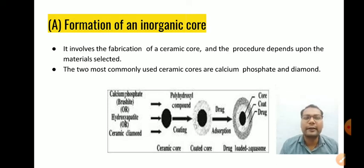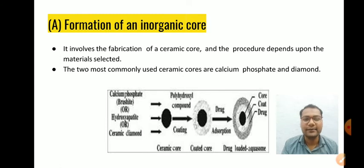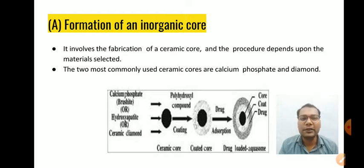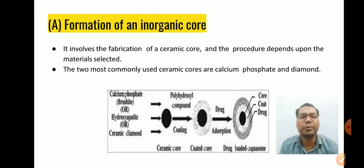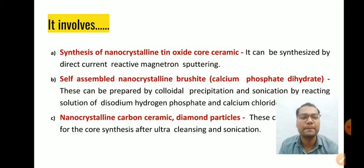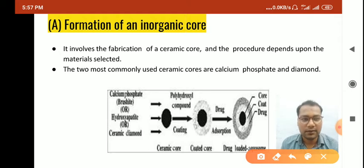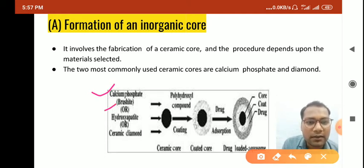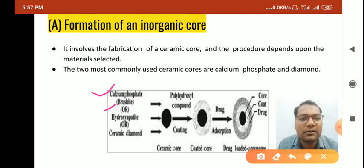The very first step is the formation of an inorganic core. It involves the fabrication of a ceramic core, and the procedure depends upon the materials selected. The two most commonly used ceramic cores are calcium phosphate and diamond. Calcium phosphate is also known as brushite or hydroxyapatite, or ceramic diamond, and this is the core material.